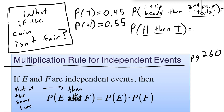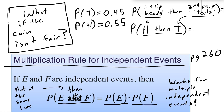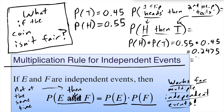When we want to know the probability of H then T, we are looking for a different kind of probability than the probability of H and T at the same time. All we need to do is take their separate probabilities and multiply them together. This works for multiple independent events — as many as you want. The probability of H then T is just the probability of H times the probability of T, which is 24.75%.